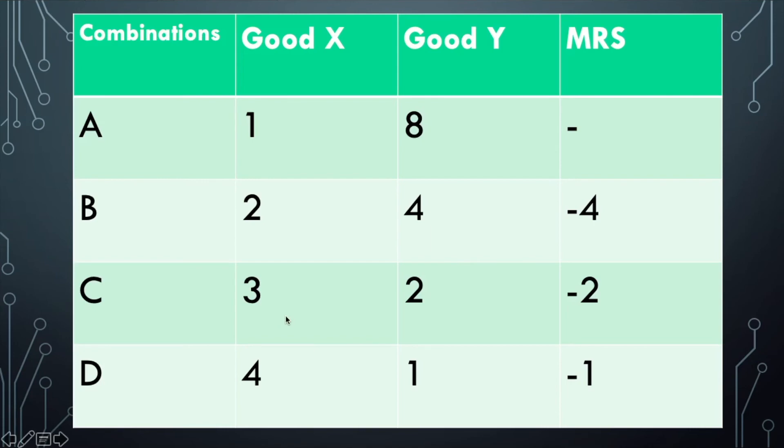And at combination C, the MRS will be 2 minus 4 divided by 3 minus 2, which equals minus 2 divided by 1, which is minus 2.